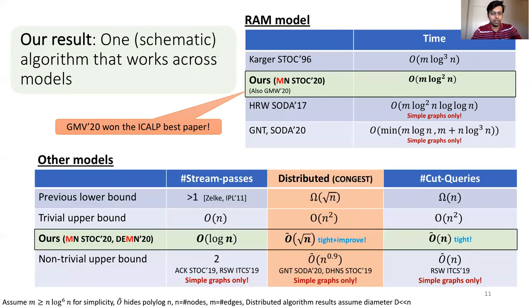In the cut query setting, we show a near linear time algorithm. This is tight up to a polylog factor because of the lower bound we have mentioned before. This also answers an open question posed by Rubinstein and others in the paper.